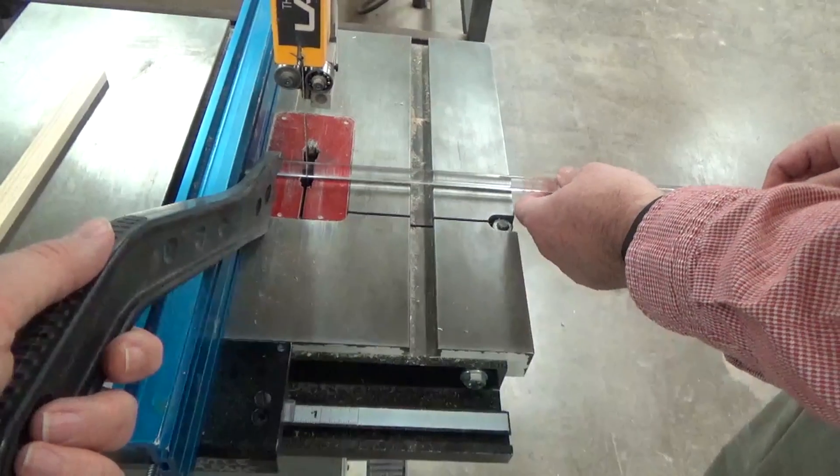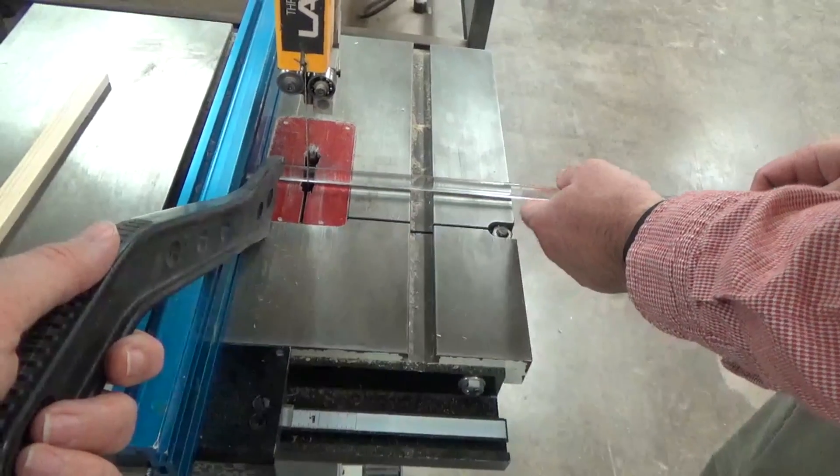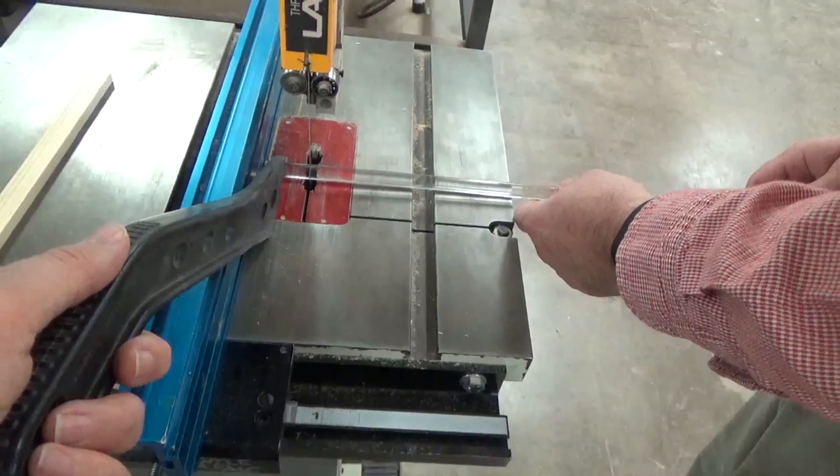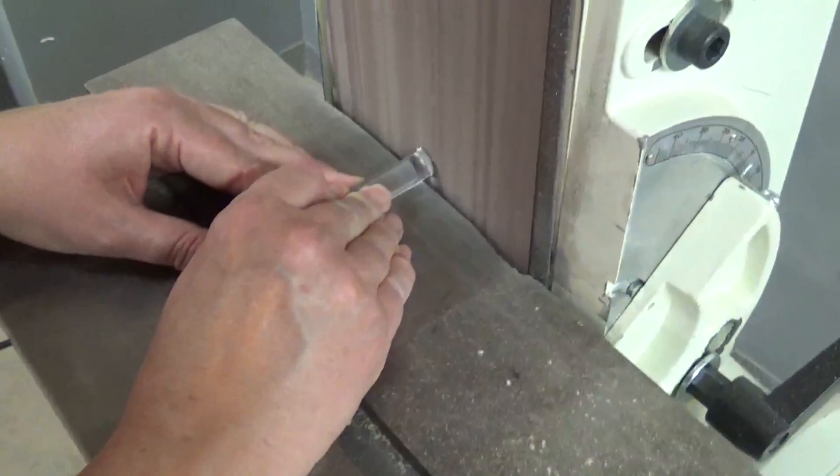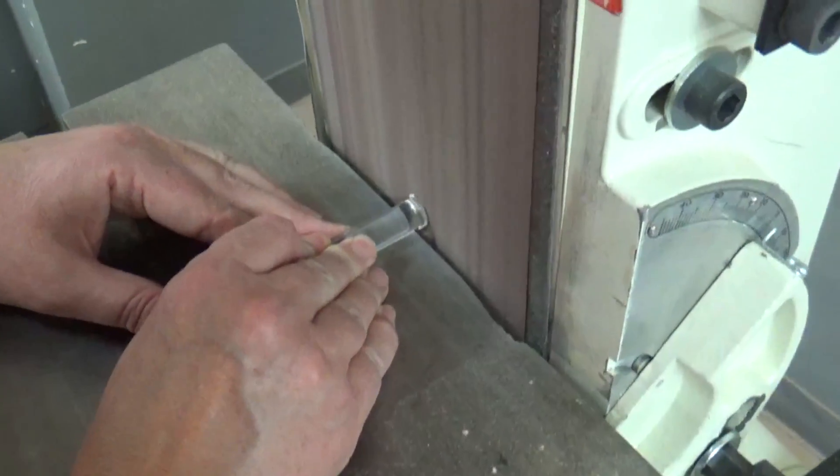Cutting the acrylic rod is pretty low tech. We use a band saw to rotate the rod and cut it, and then we do a little smoothing of the ends on the belt sander, but you have to be careful or you'll actually melt the acrylic, so you have to just tap it lightly.